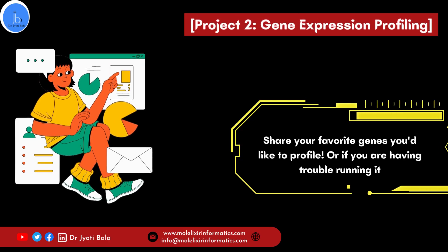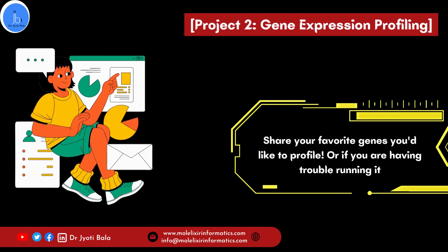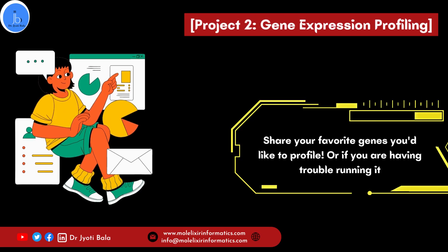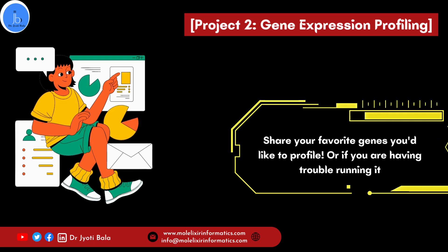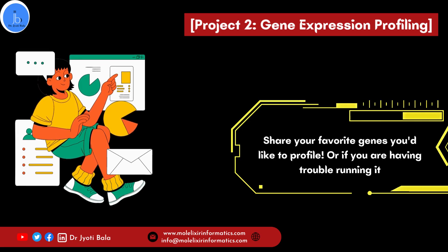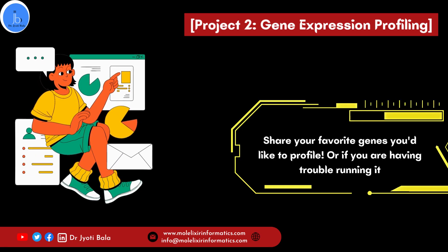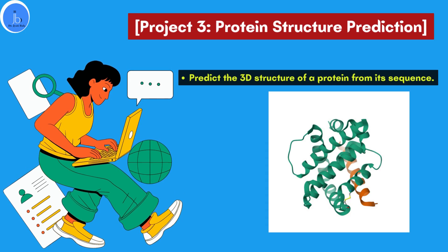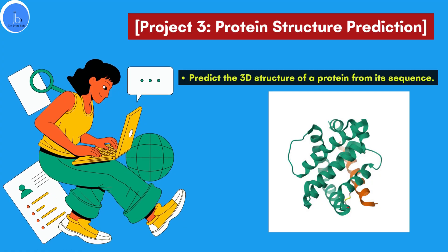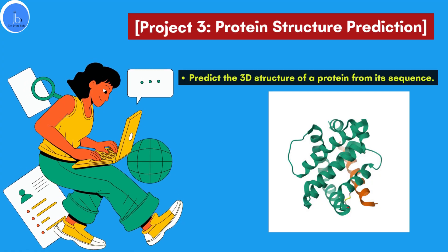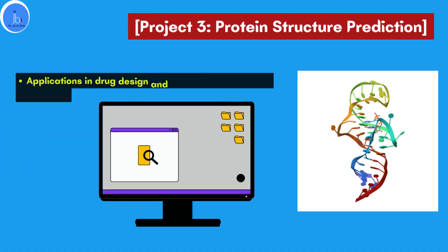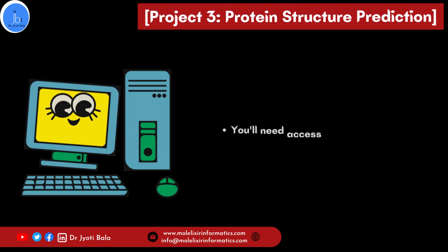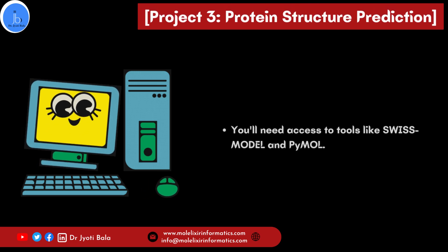You may also share your favorite gene expression profile from such a project in the comment section. And if you are having any trouble doing the analysis, please feel free to reach out. The third project could be protein structure prediction, where you will predict the tertiary 3D structure of a protein from its sequence. This has applications in diverse areas like drug design and understanding protein function. For running such a project, you will need tools like Swiss Model, PyMol, and Discovery Studio.